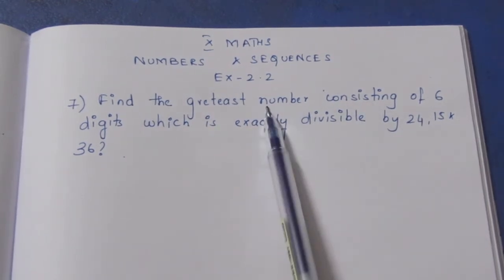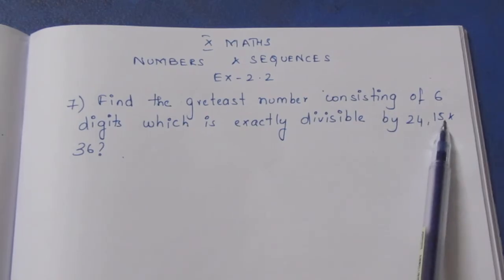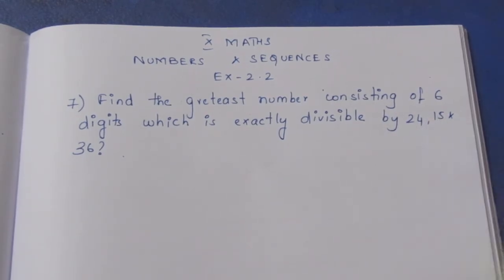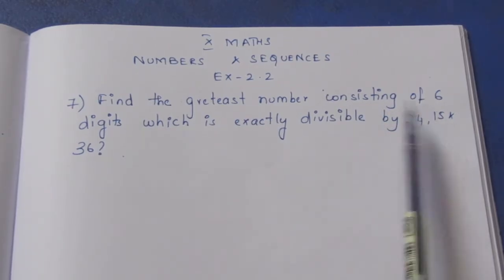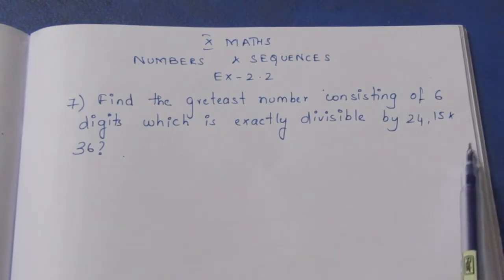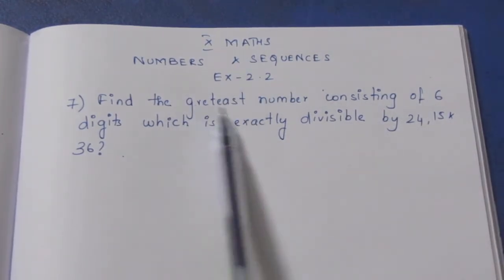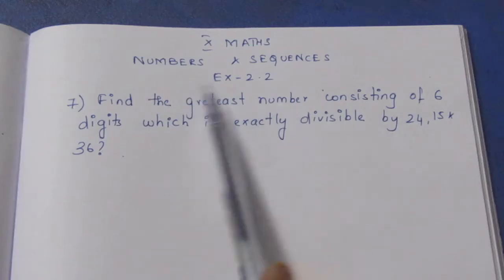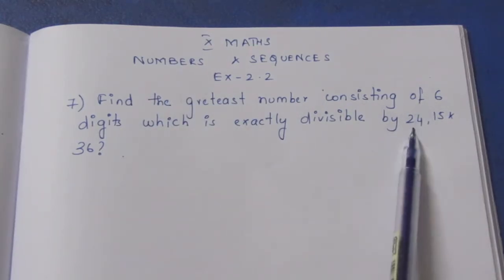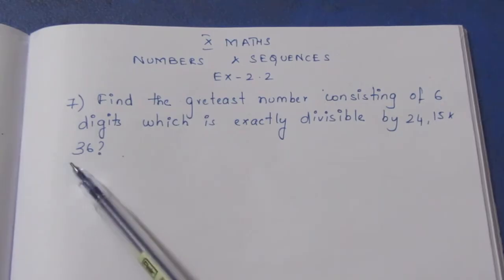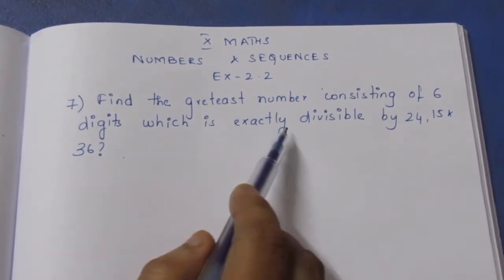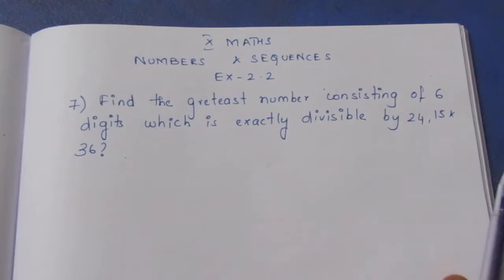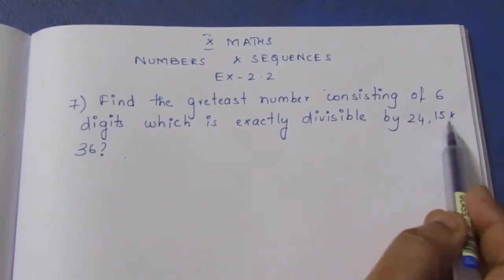For example, 999999 - let's check: 15 is not divisible, 5 is not divisible. So 9999 is divisible by 3. But 24, 15, and 36 - 6 is not directly divisible. So how do we approach this sum? This sum requires finding divisibility by all 3 numbers, so we use the LCM.